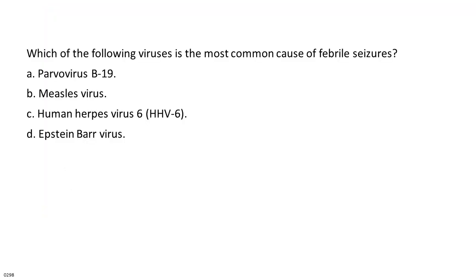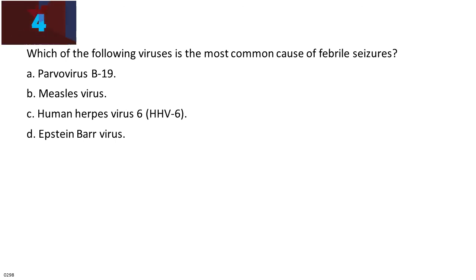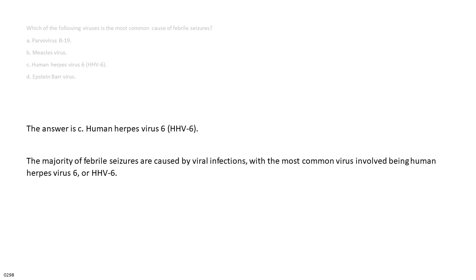Which of the following viruses is the most common cause of febrile seizures? A. Parvovirus B19. B. Measles virus. C. Human herpes virus 6 (HHV6). D. Epstein-Barr virus. The answer is C. Human herpes virus 6 (HHV6). The majority of febrile seizures are caused by viral infections, with the most common virus involved being human herpes virus 6, or HHV6.